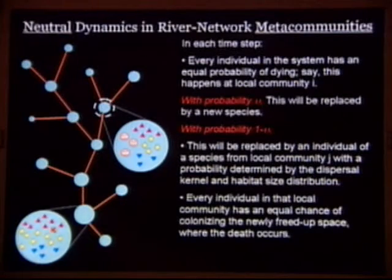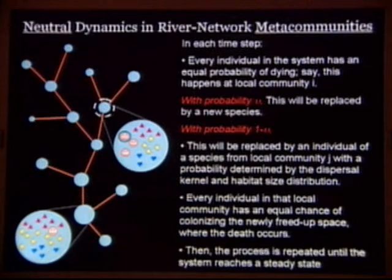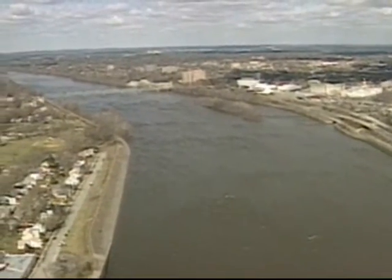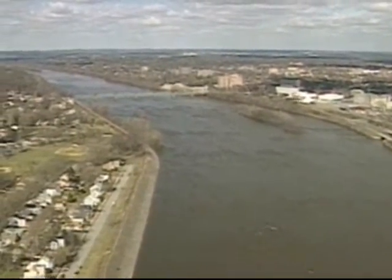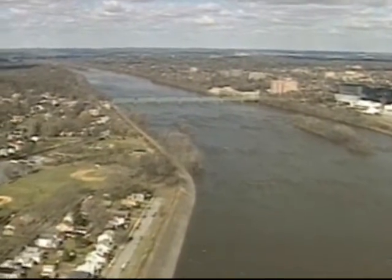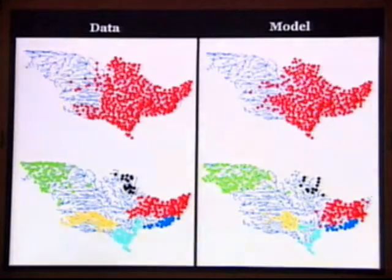A similar approach has been used to model forest ecosystems, but this is the first attempt to apply it to biodiversity in rivers. The aim is to predict how changes in precipitation, runoff, or river flow would affect fish species in different areas. As side-by-side comparisons of predictions and actual data suggest, it appears to work.